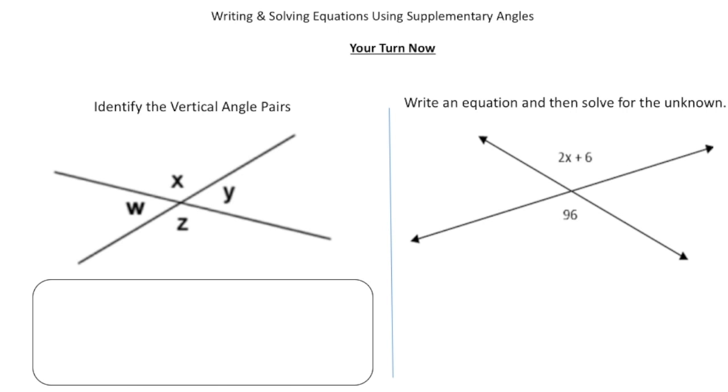All right. Welcome back. Let's see how you did with these practice problems. So the first part, you had to identify the vertical angle pairs. So here, we have two lines, right? And it creates four angles. And angle W and angle Y are vertical. They're opposites, right? So we're going to have angle W and angle Y. That's one. And then the second one, I'm going to use a different color. We're going to have angle X, which is the same as angle Z. So that's going to be our second vertical angle pair. Angle X and angle Z.